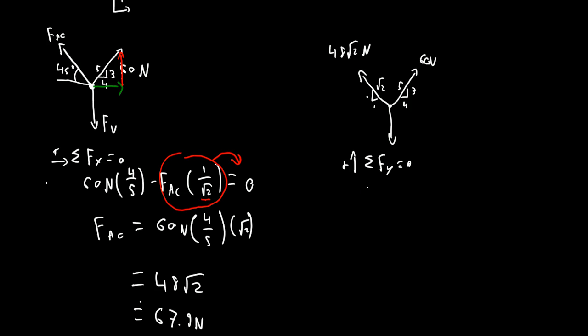So what did we get? We got 60 newtons times 3 over 5. That's sine of this angle, which is opposite 3 over hypotenuse 5, plus, these are positive because they're vertically oriented going up, plus 1 over root 2, which is opposite 1 over root 2 hypotenuse, times 48 root 2 newtons, minus FV equals 0.